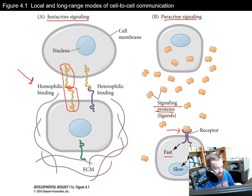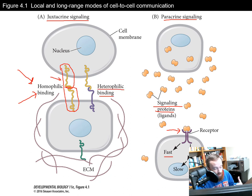The two types of juxtacrine binding are homophilic binding, where a receptor binds to the same receptor on another cell — binding to its twin — and heterophilic binding, where a receptor only binds to its specified partner that's different from itself, binding to a partner protein with a different makeup.